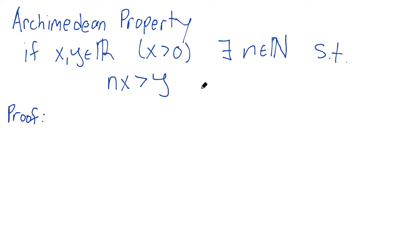Now something to note here, before I get into the real proof of it, is this statement here, this is equivalent to saying that n is greater than y over x. I can divide by x because I'm saying x is not zero here. So in other words,